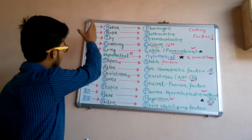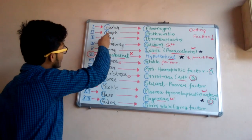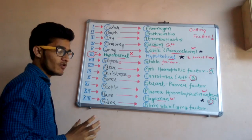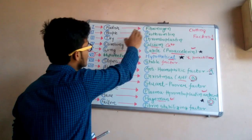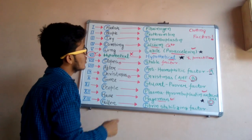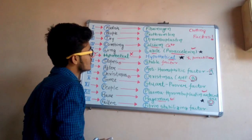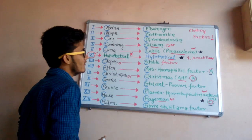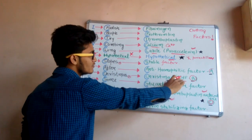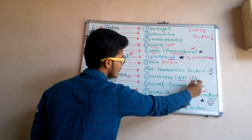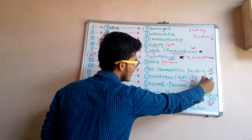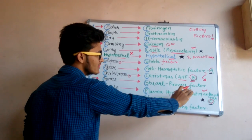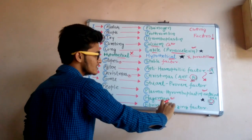So the clotting factors from number one to thirteen are: fibrinogen, prothrombin, thromboplastin, calcium ion, Levi factor, the hypothetical factor six, stable factor, anti-hemophilic factor A, Christmas factor (anti-hemophilic factor B), Stuart Prower factor, plasma thromboplastin antecedent, Hageman factor, and fibrin stabilizing factor.